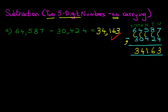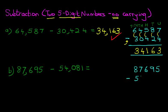As I said, when we are doing no carrying it is very simple. Let's have a look at our second example. We have 87,695 minus 54,081. Again, we are going to rewrite the question in the vertical format. So we have 87,695 minus 54,081.